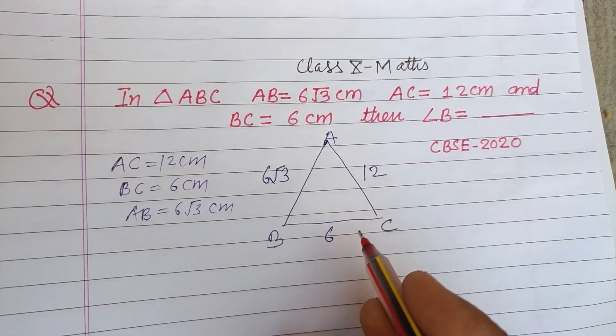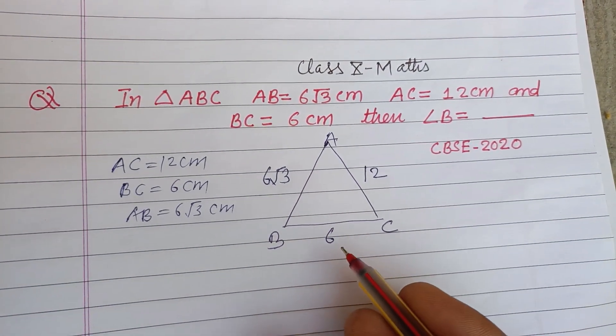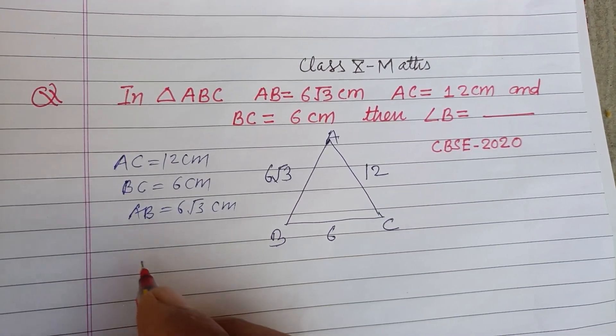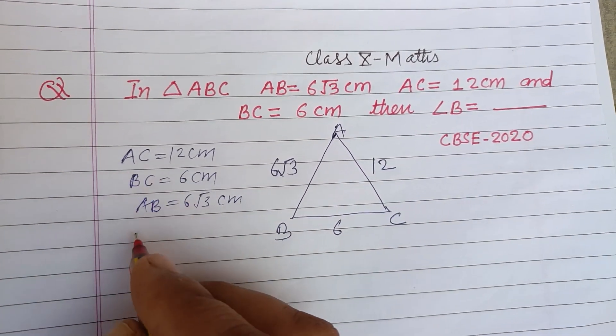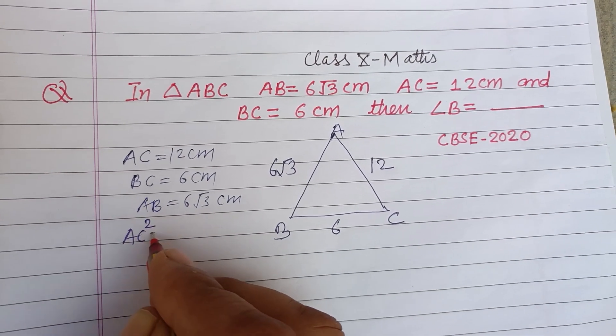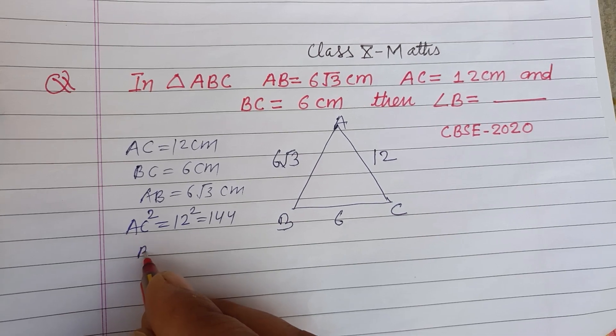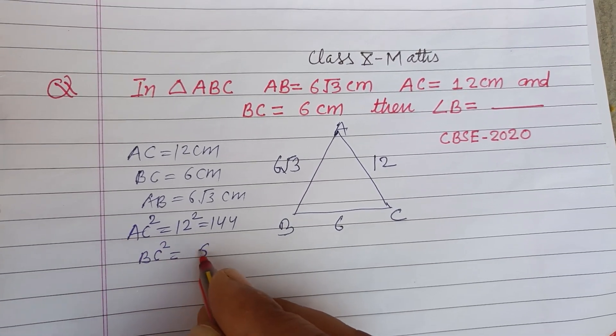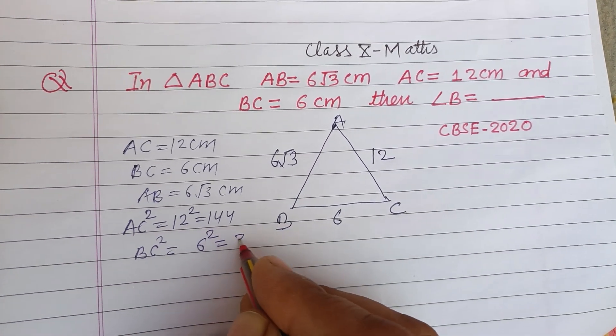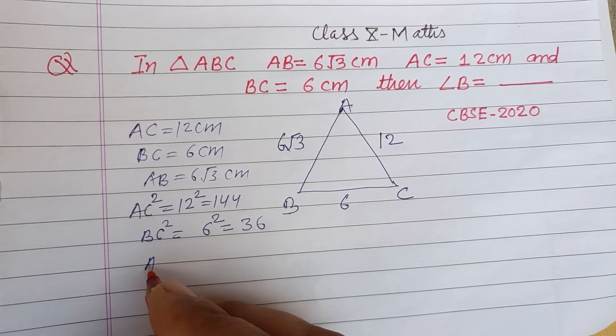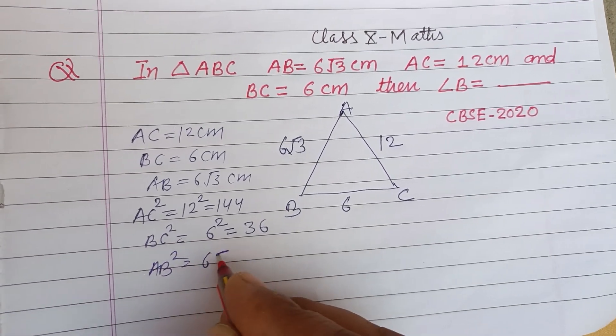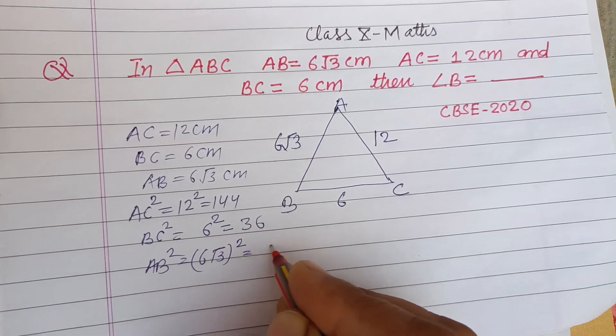We check if this relation is related to right angle triangle or Pythagorean theorem. So the highest side is AC. AC squared equals 12 squared which is 144. BC squared equals 6 squared which is 36.